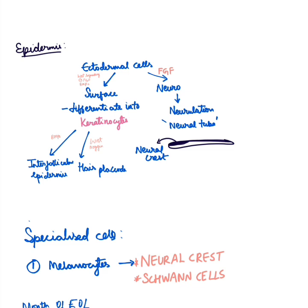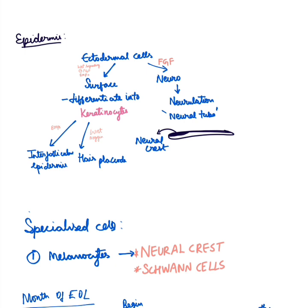The epidermis is derived from surface ectodermal cells. These ectodermal cells have the potential to form both the epidermis and the neural tube. In the presence of fibroblast growth factor (FGF), ectodermal cells form neuroectoderm, which through neurulation forms a neural tube. If FGF is inhibited, in the presence of WNT signaling and bone morphogenetic protein (BMP), surface ectoderm is formed. These surface ectoderm cells differentiate into keratinocytes, which in the presence of WNT and Noggin form hair placode, and in the presence of BMP form the interfollicular epidermis — our skin.